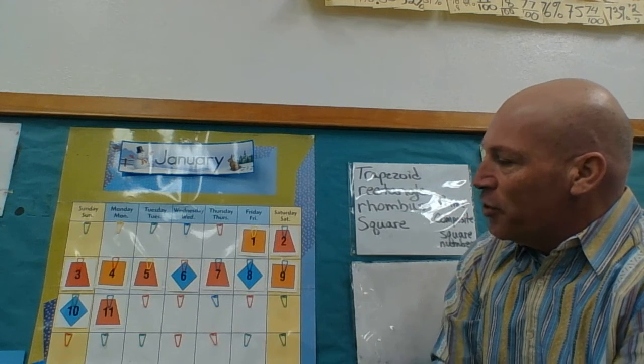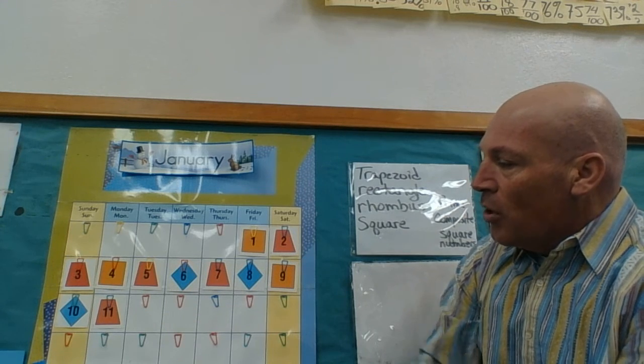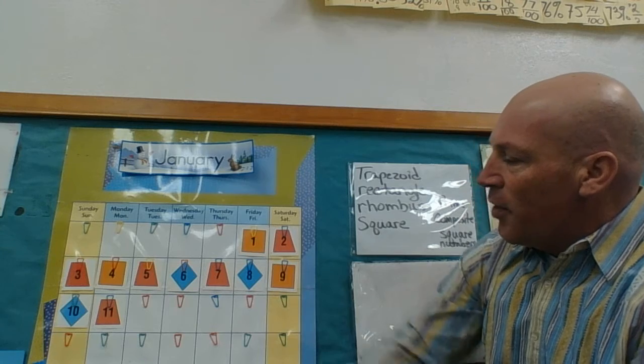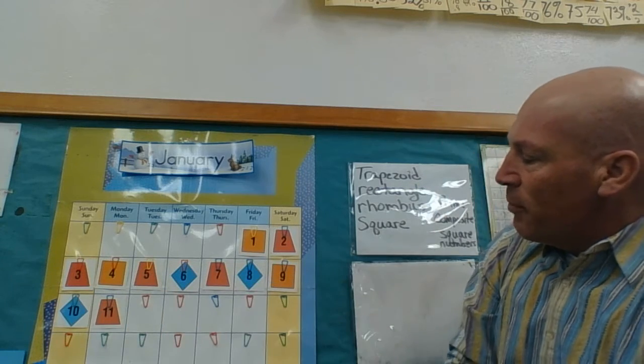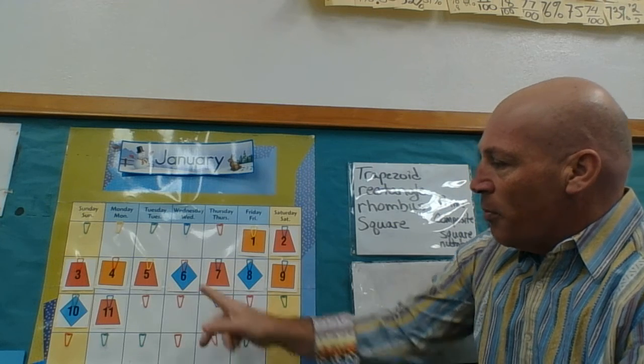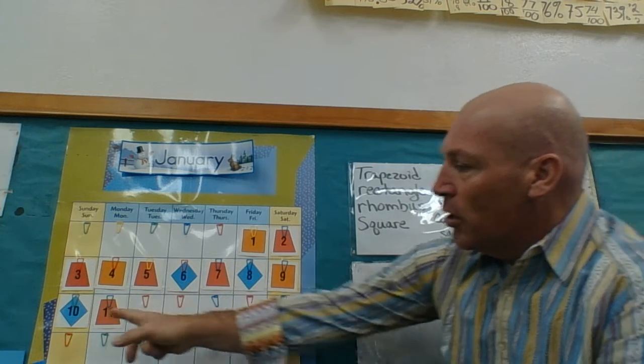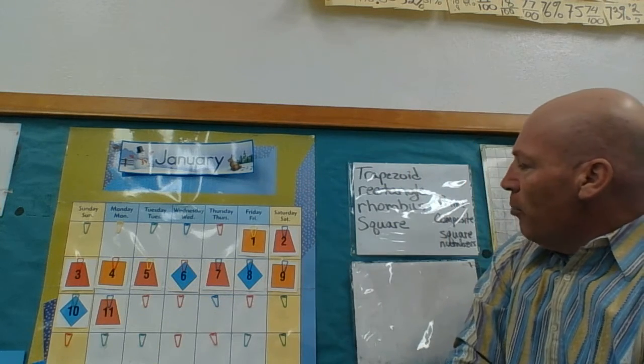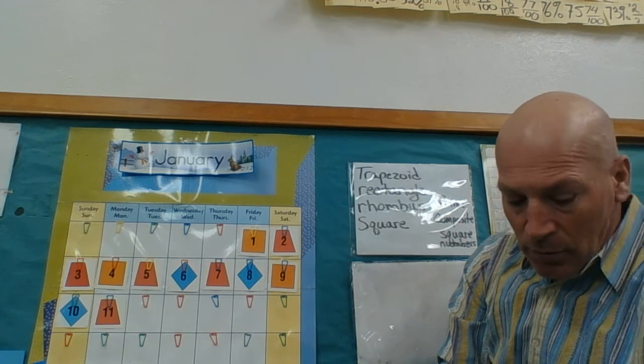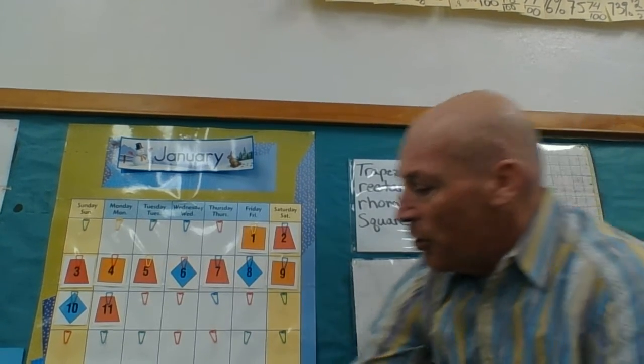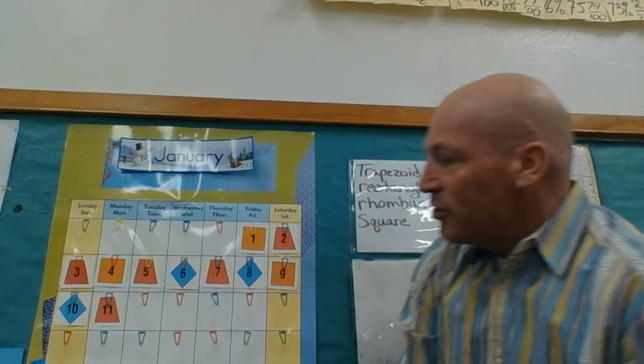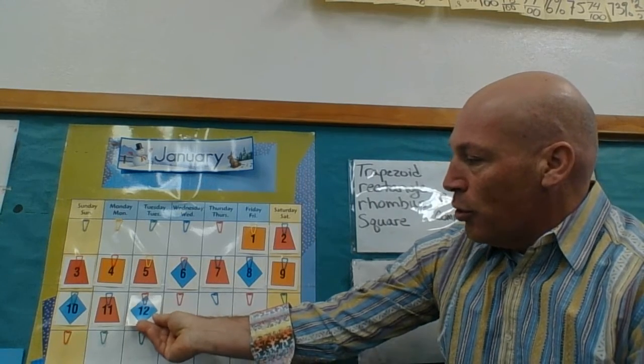But today is the 12th, January 12th. What type of number is 12 that might have something in common with some of these others? We know that it's even. So could it be a possibility that it could be a blue rhombus? What do you guess? If you guessed so, you were correct.